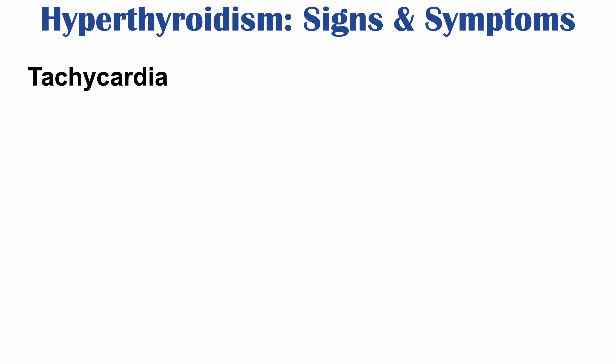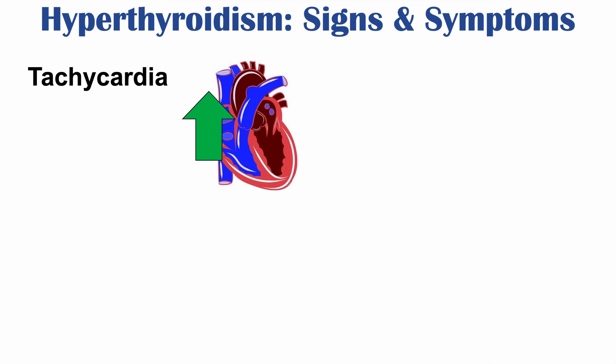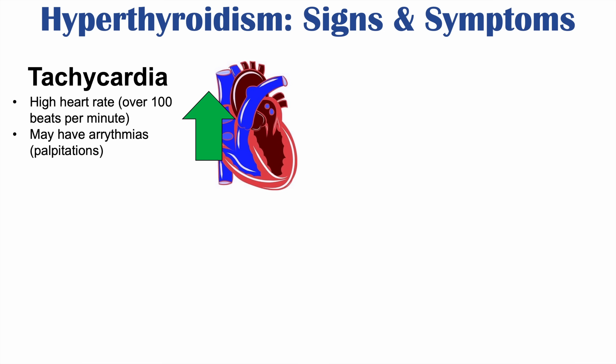Important physical signs of hyperthyroidism include tachycardia — a heart rate over 100 beats per minute. Because of this increased heart rate, there may be arrhythmias and palpitations, where the patient feels their heart skips or has an altered beat. This can ultimately lead to atrial fibrillation.